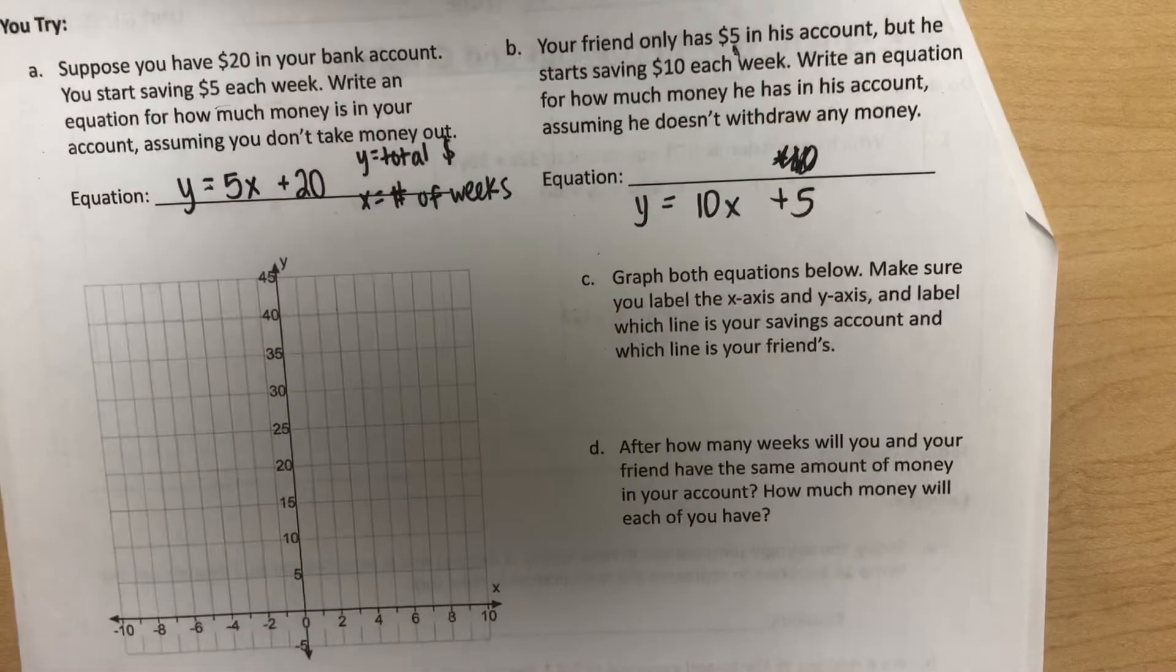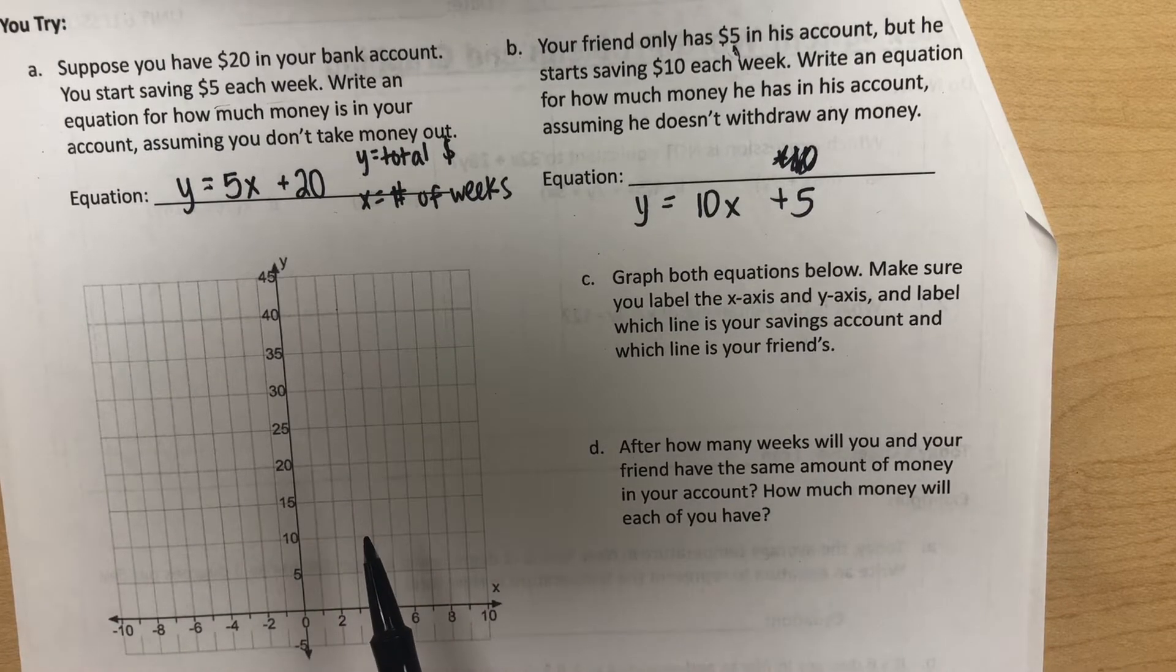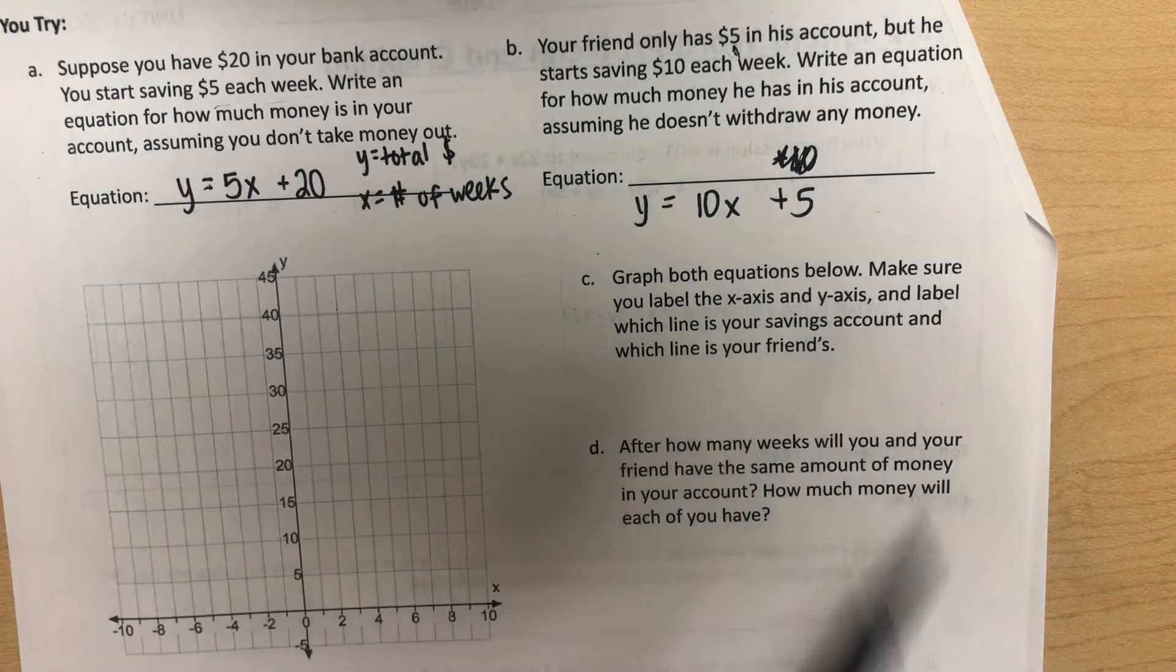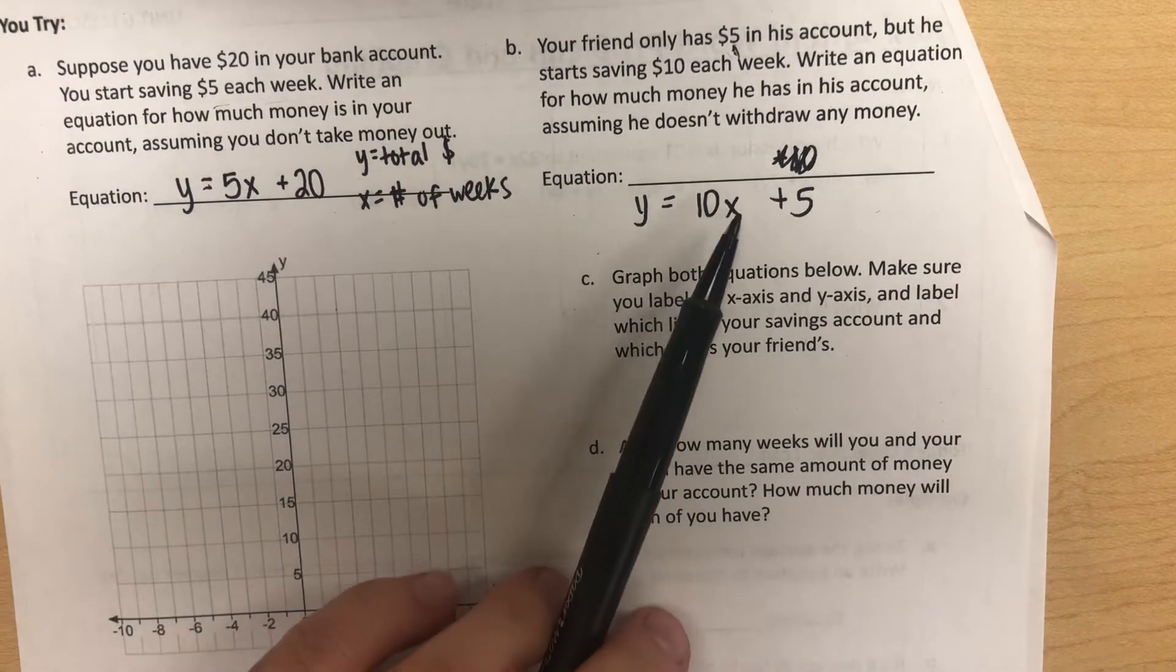The next part of the question asks us to graph both equations. We want to make sure we're labeling our x and y axes, labeling which line is our savings account and which line is our friend's savings account.